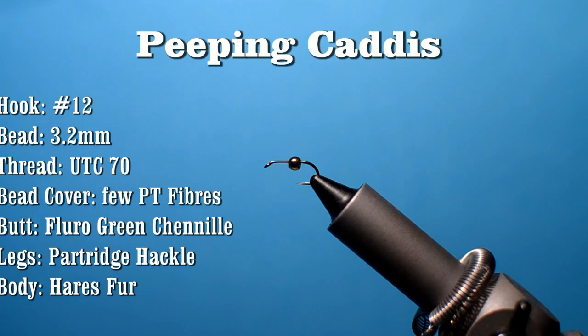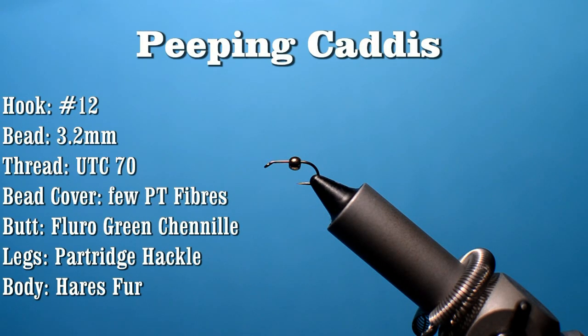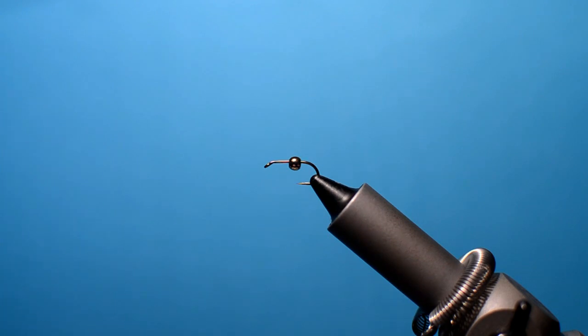Okay, what we're going to tie up is a Peeping Caddis version. It's one of my favorite little versions. In the vise we've got a size 12 hook, 3.2mm gold bead.